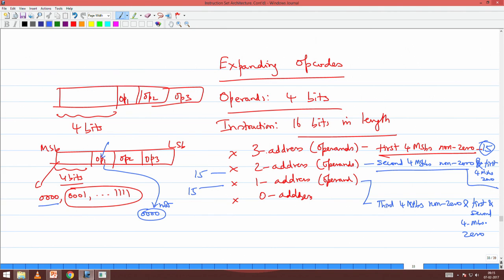And 0 addresses, all first, second and third 4 MSBs most significant bits are 0s. So if everything is 0, then this is 16 zero address instructions. So I could totally have 45 plus 16, 61 instructions. Are you able to follow?